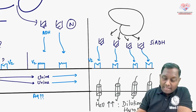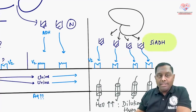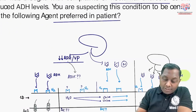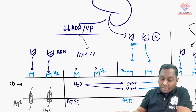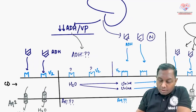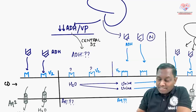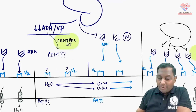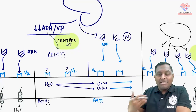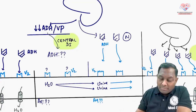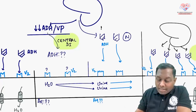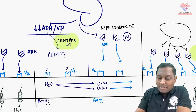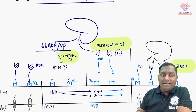So the third condition is SIADH — syndrome of inappropriate ADH secretion. The first condition, where the brain itself is not giving ADH, we call central diabetes insipidus. The second condition, where ADH is coming normally but cannot stimulate the receptor due to a kidney-level receptor problem, we call nephrogenic diabetes insipidus.